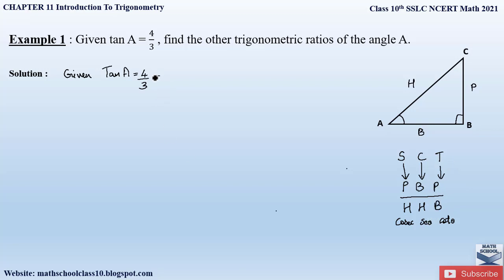Tan θ is given by perpendicular by base. Here the perpendicular value is 4 and the base value is 3, but we do not know side AC, which is the hypotenuse. So we have to find out the value of AC first to find the other trigonometric ratios.